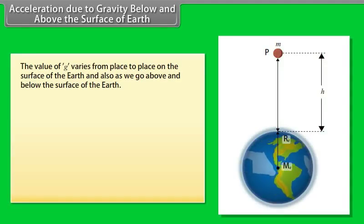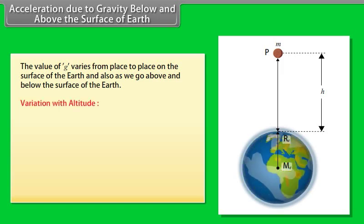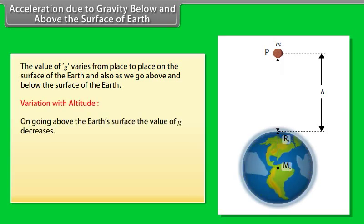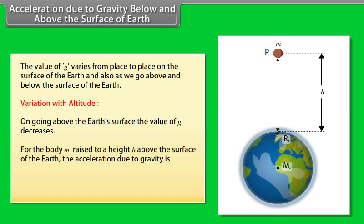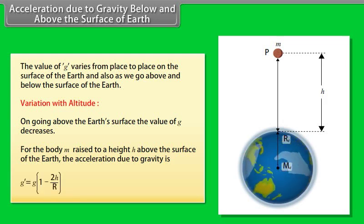Acceleration due to gravity below and above the surface of earth. The value of g varies from place to place on the surface of the earth and also as we go above and below the surface of the earth. Variation with altitude: On going above the earth's surface, the value of g decreases. For the body m raised to a height h above the surface of the earth, the acceleration due to gravity is given by g dash is equal to g multiply by 1 minus 2h upon r.